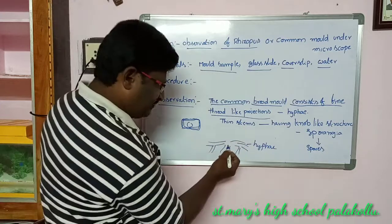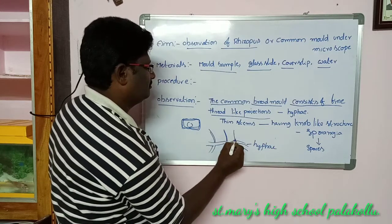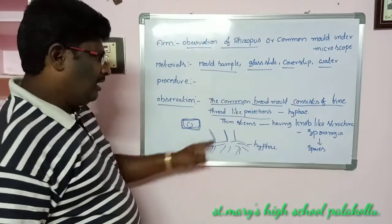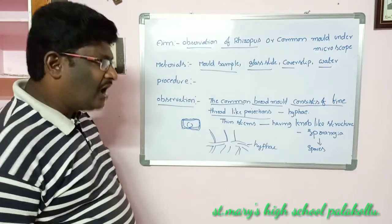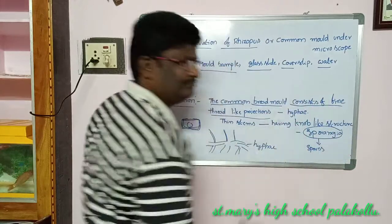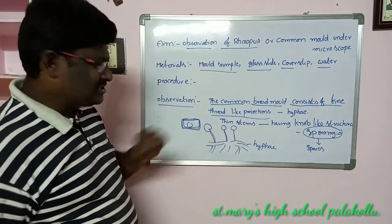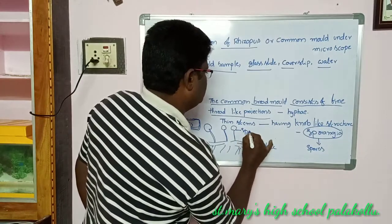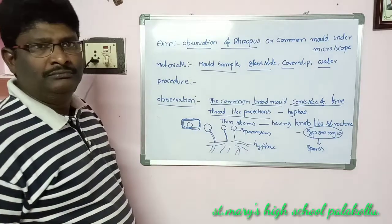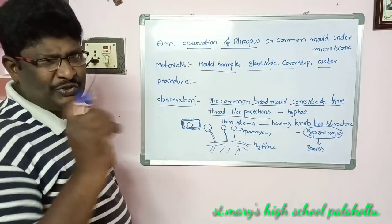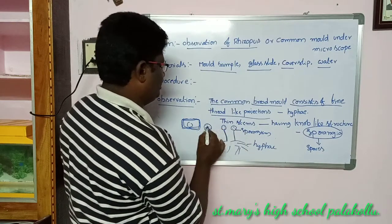From these hyphae, there is a thin stem. On the top of the stem, there is a knob-like structure. This knob-like structure is called the sporangium. Inside the sporangium, there are some minute structures called spores.